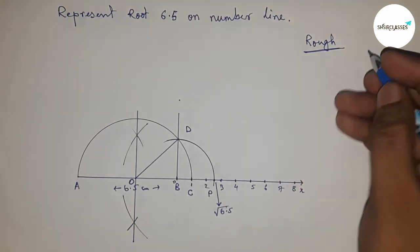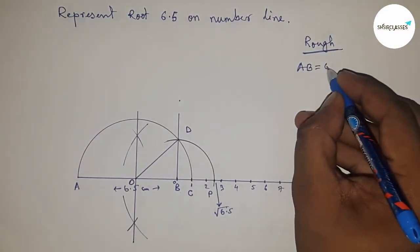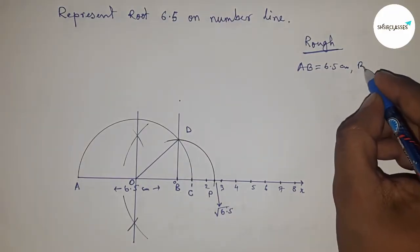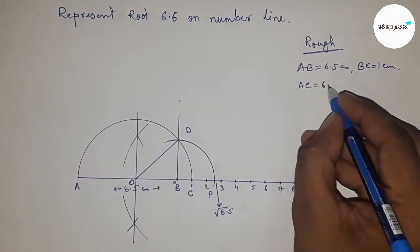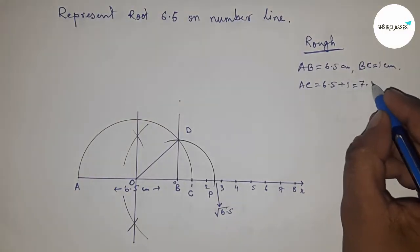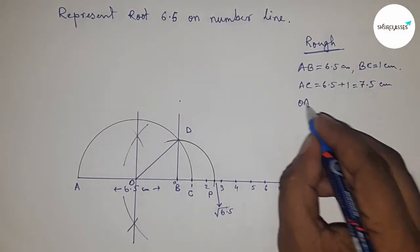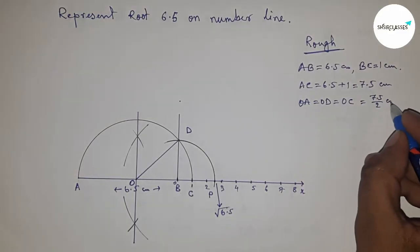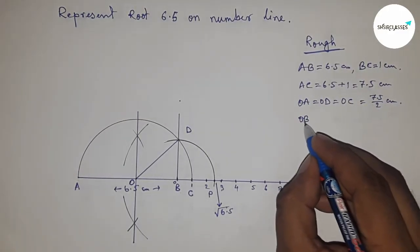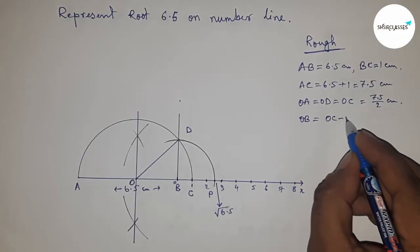Given AB equals 6.5 centimeters and BC equals 1 centimeter, so AC equals 7.5 centimeters. The radius OA equals OD equals OC equals 7.5 by 2 centimeters.